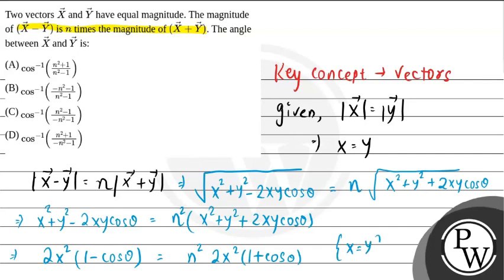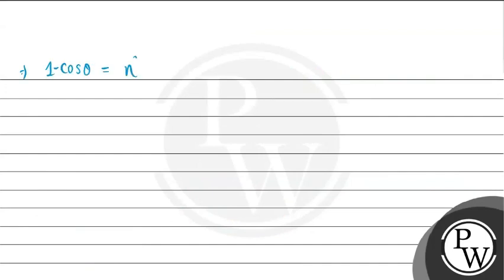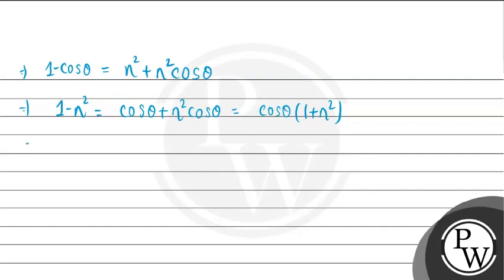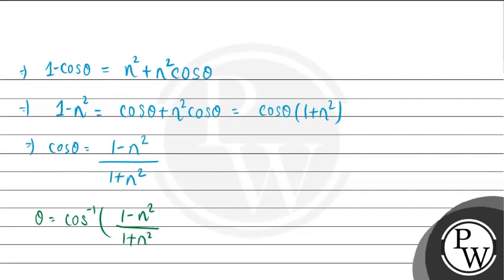Further solving: 1 - cosθ = n² + n² cosθ, so 1 - n² = cosθ + n² cosθ = cosθ(1 + n²). Therefore cosθ = (1 - n²)/(1 + n²), which gives θ = cos inverse (1 - n²)/(1 + n²). Rearranging, this can be written as cos inverse (n² - 1)/(-(n² + 1)), or equivalently cos inverse (n² - 1)/(-(n² - 1)) after simplification.